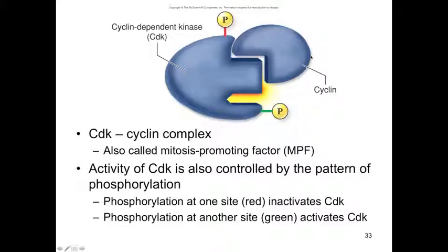However, when the concentrations of cyclin increase, cyclin binds to the CDK, and we have a cyclin-CDK complex. This is also called a mitosis-promoting factor because it promotes movement from one phase of the cell cycle into the next, and thus towards mitosis. The activity of CDK is also controlled by the pattern of phosphorylation — phosphorylation at one site inactivates the CDK, or phosphorylation at another site activates it. This is a big area of research in cell cycle control, and it's relevant because it has everything to do with cancer.